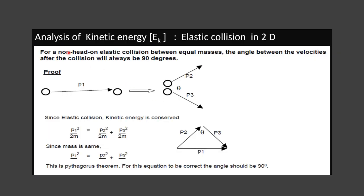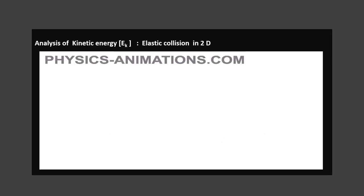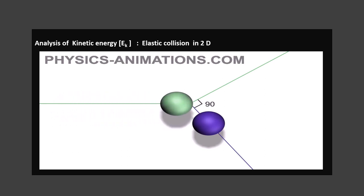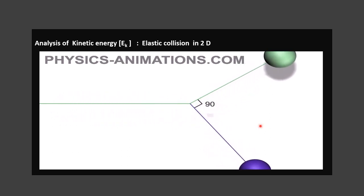For elastic collision in two dimensions, the angle between the two masses after collision is exactly 90°. Since kinetic energy is conserved: P1²/2m = P2²/2m + P3²/2m, which simplifies to P1² = P2² + P3². This is Pythagoras' theorem, and it is valid only when the angle between the two momentum vectors is 90°. In a 2D collision, when the objects collide, they move off at 90° to each other.